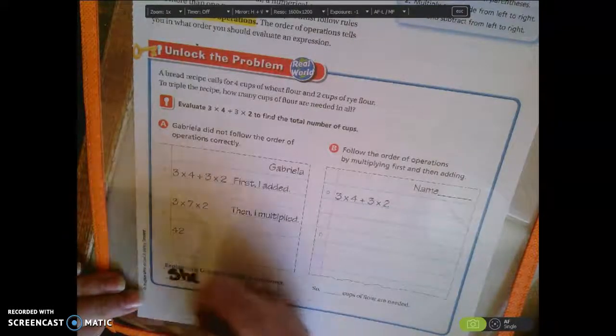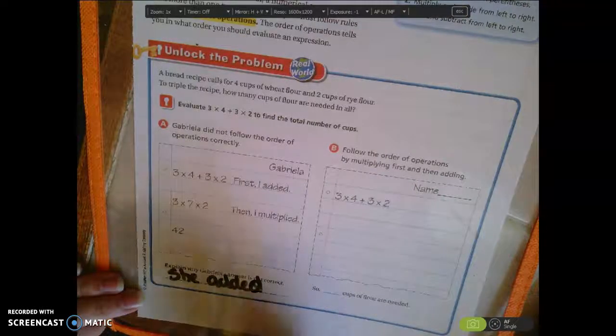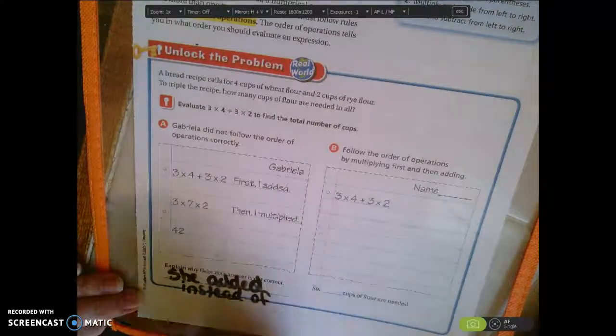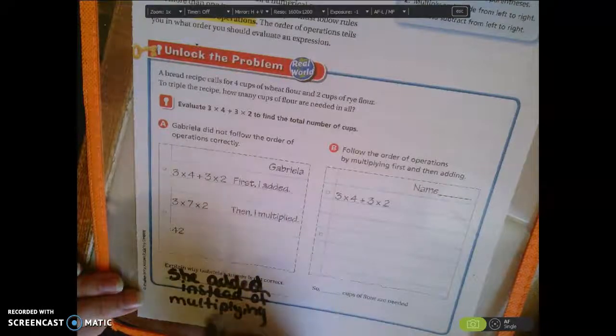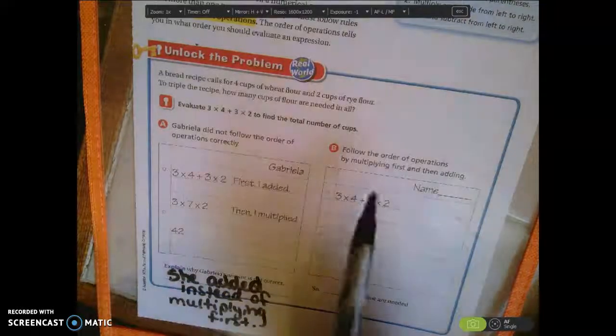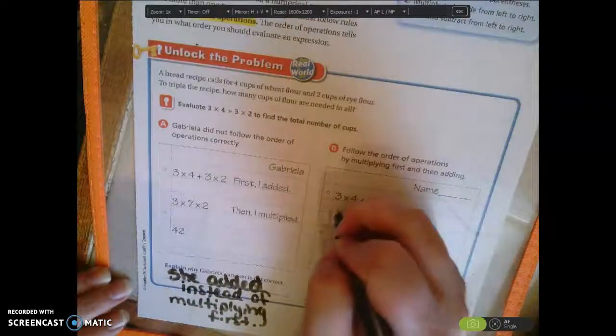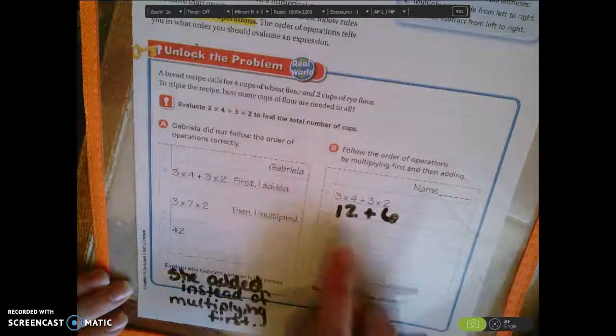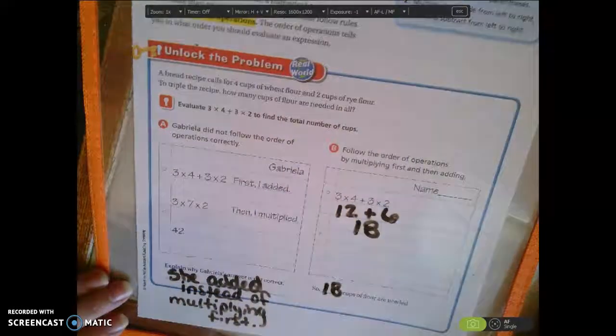She added instead of multiplying first. Here it says follow the order of operations by multiplying first and then adding. So we're going to do 3 times 4, which is 12, plus 3 times 2, which is 6. So 12 plus 6 is 18. So 18 cups of flour are needed.